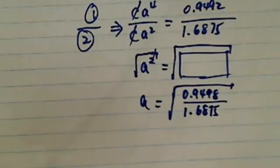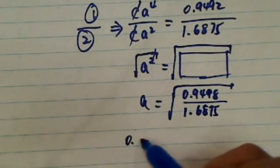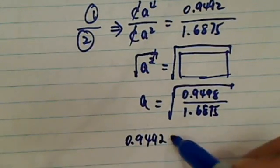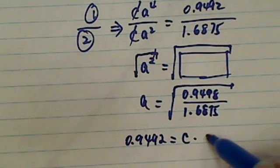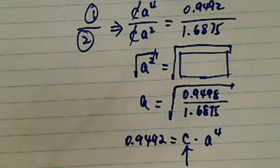From here, you can go back to the equation that earlier you had, 0.9492 is equal to c times a to the 4th, and from here you can solve for c.